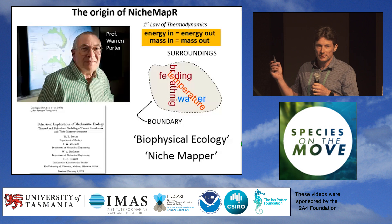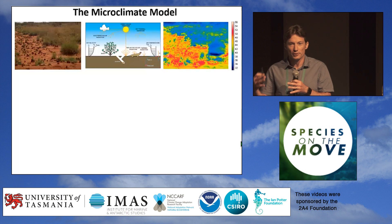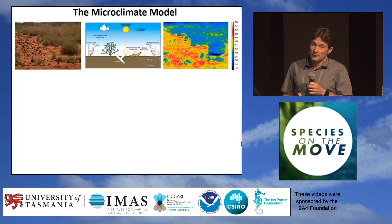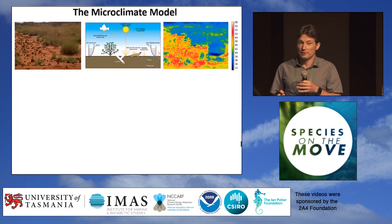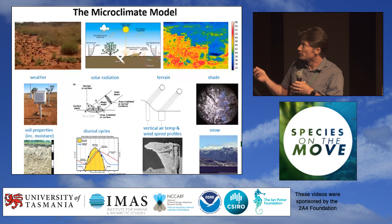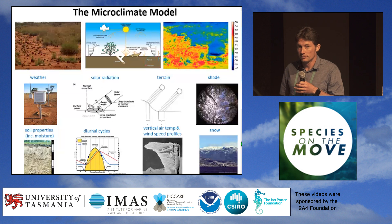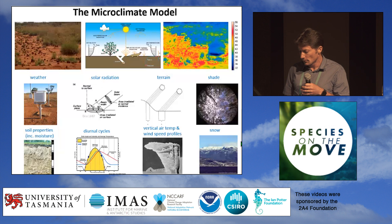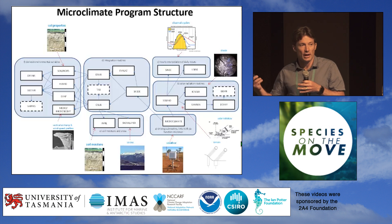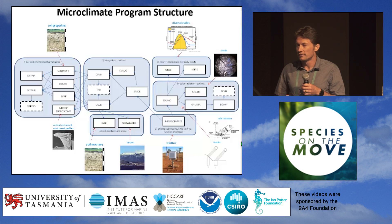Half the battle is getting the environment experienced by the organism right in terms of the variables those equations demand. In the terrestrial world, that involves understanding microclimates, which vary dramatically through space and time. Processes determining microclimates include basic weather conditions, effects of terrain and shade on solar radiation, soil properties including soil moisture, and other factors like snow cover. Porter's model captures all of these processes, making it a really powerful microclimate model useful for a whole lot of problems in ecology.